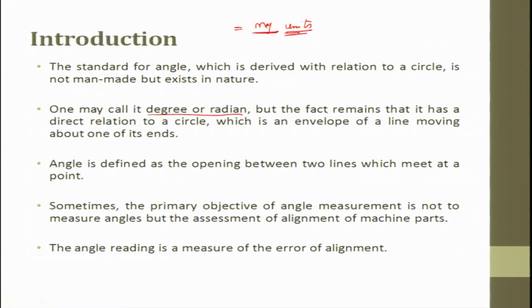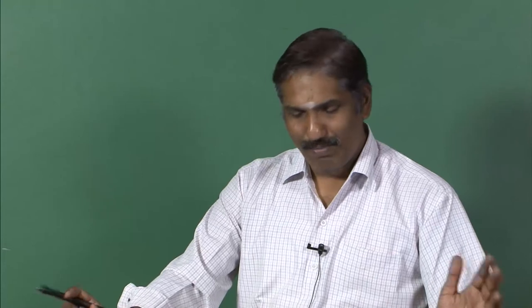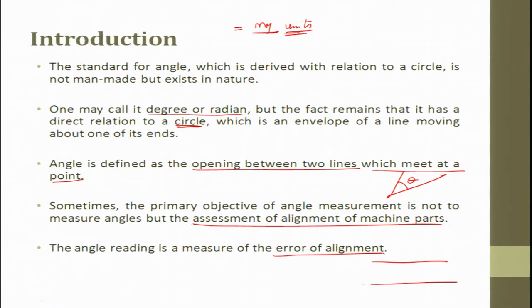One may call it degree or radians, but it has a direct relationship to a circle, which is an envelope of a line moving about one of its edges. Angle is defined as the opening between two lines which meet at a point. When we want to measure an angle, sometimes the primary objective is not to measure the angle itself, but to assess the alignment of a machine part — the angle reading is measured for the error of misalignment.